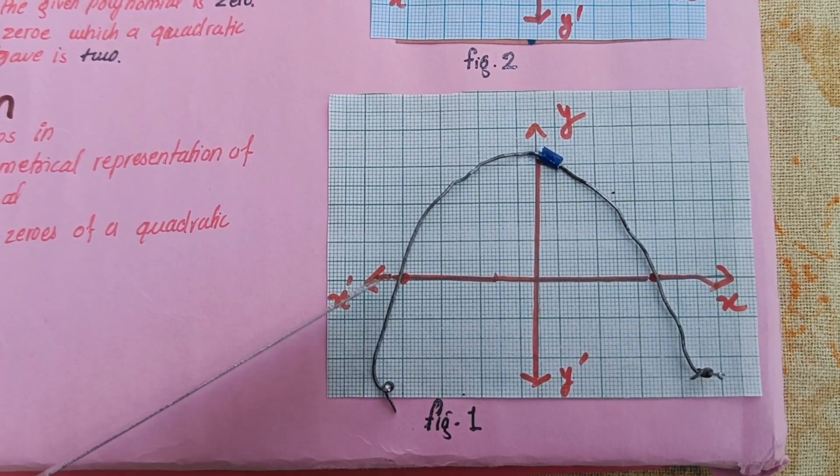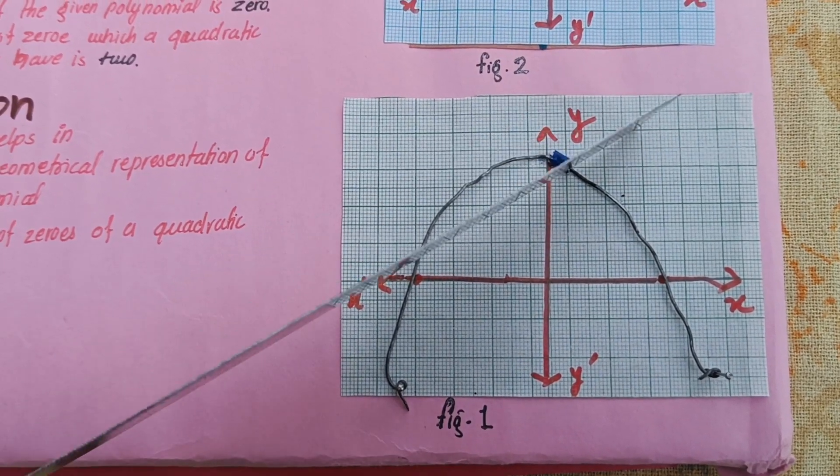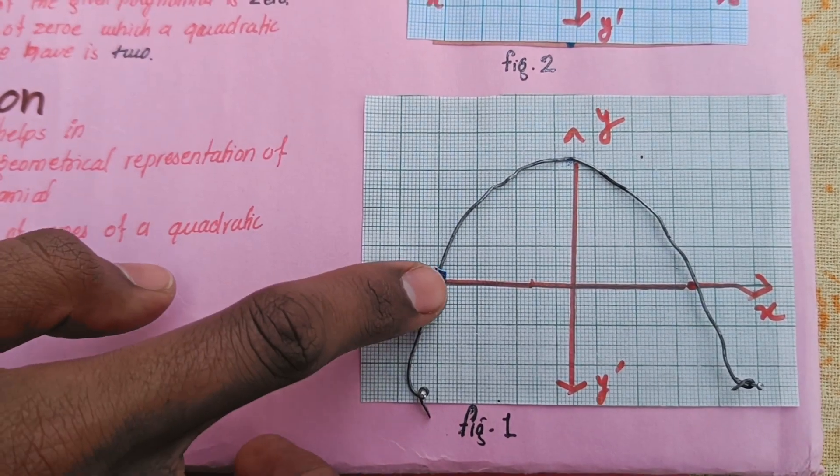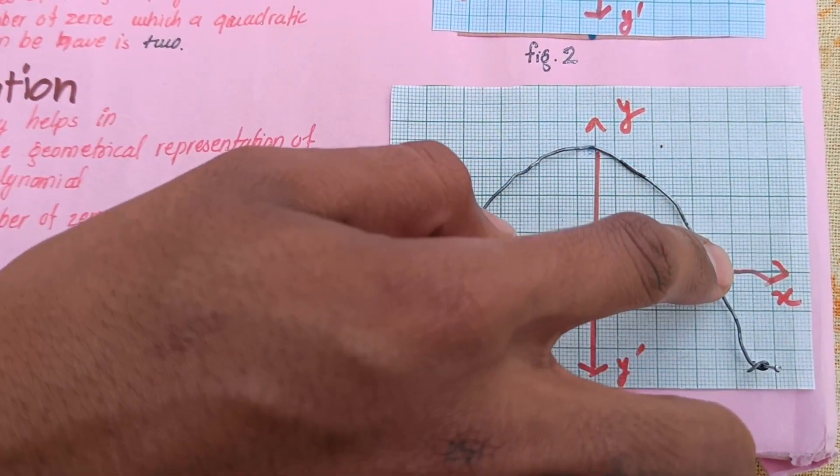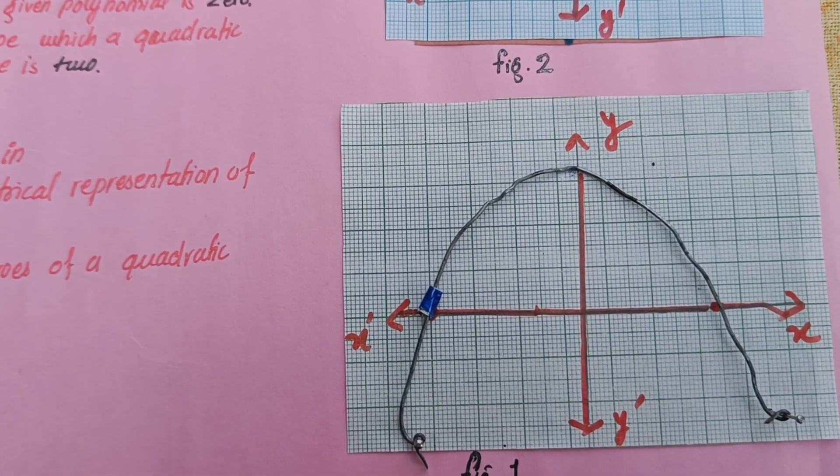In third graph of ax square plus bx plus c, the direction is downward. Here a is less than 0 and it cuts the x-axis at 2 points. So number of zeros is 2.